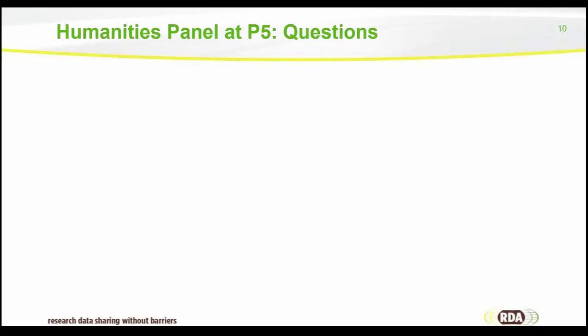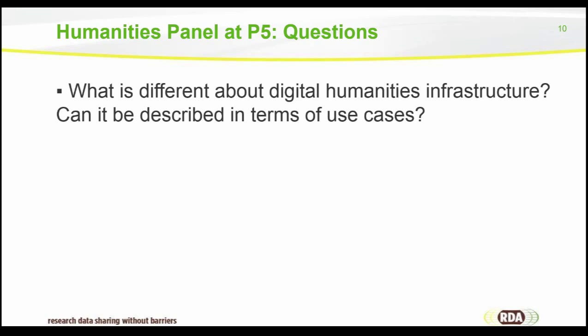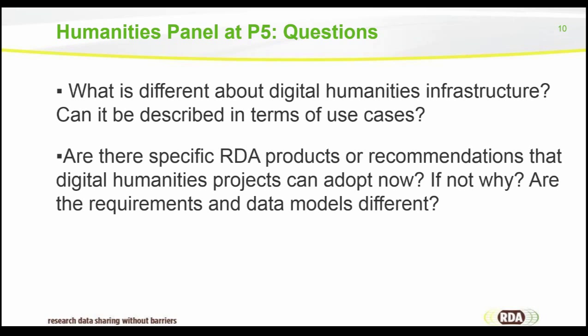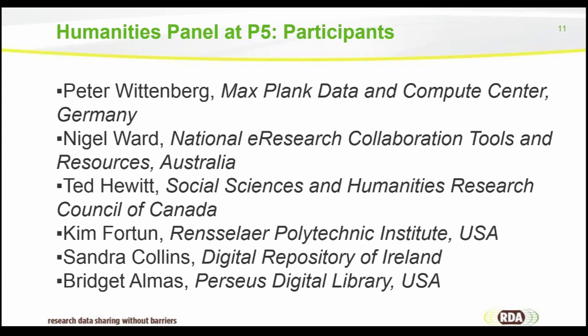At the humanities panel at Plenary 5, we asked the panelists to answer two sets of questions. First, what is different about digital humanities infrastructure, and more specifically, can those differences be described in terms of use cases? Second, are there specific RDA products or recommendations that digital humanities projects can adopt now, and if not, why? We particularly looked at whether the requirements of data models are different and whether that's contributing to a lack of adoption. Participants included Peter Wittenberg from the MaxPoint Data Compute Center, Nigel Ward from Nectar in Australia, Ted Hewitt from the Sharpe in Canada, Kim Fortune from RPI, Sandra Collins from LaCosta in Ireland, and myself.